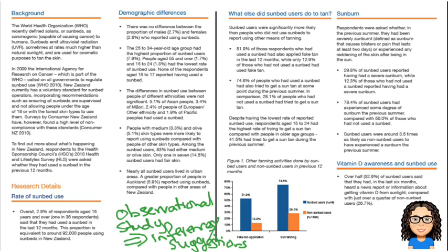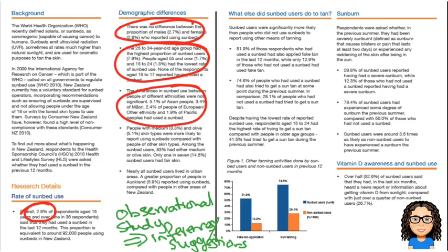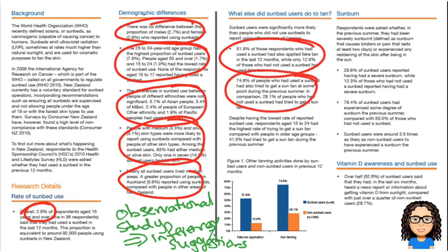So some of their findings are things like down here, they found 2.8% of respondents 15 years and older had used a sunbed. So that is one finding. Another finding is that there was no difference in the proportion of males and females that use sunbeds. Then they've got another finding here about the differences in age groups. Looking at different ethnicities is another finding. So all of these different things here are different findings of their survey.